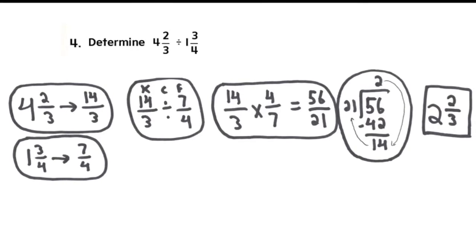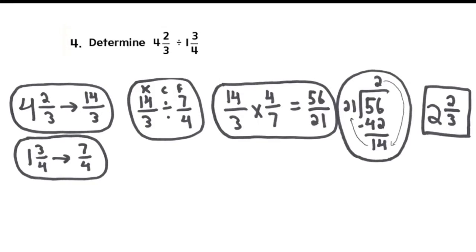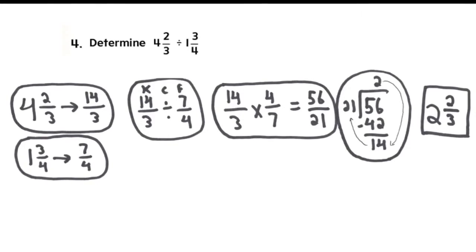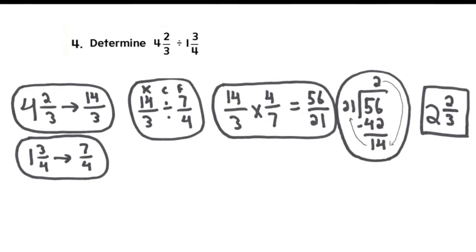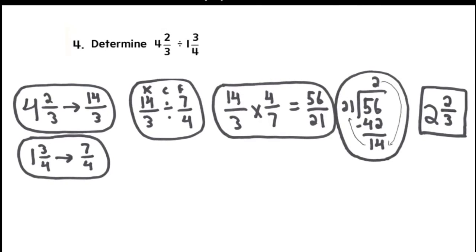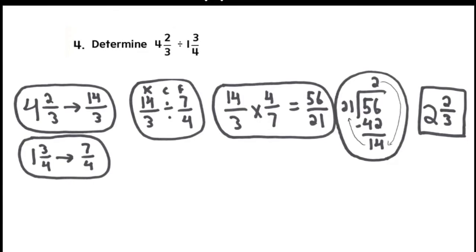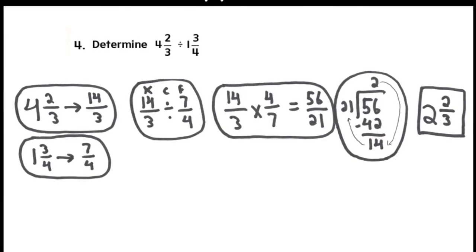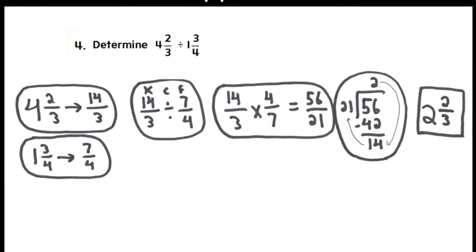You end up with 2 and 14 over 21. Now that step is not visible here, but you have to ask yourself, can you simplify that? The answer is yes. And always train yourself: simplify, simplify, simplify. If you do that here, your final answer is 2 and 2 thirds.